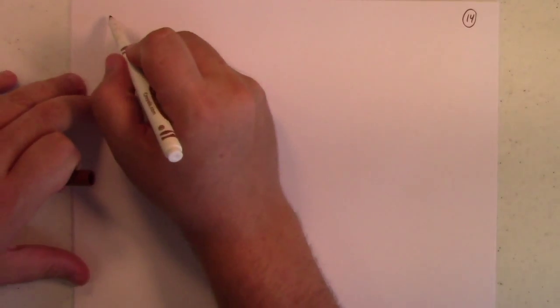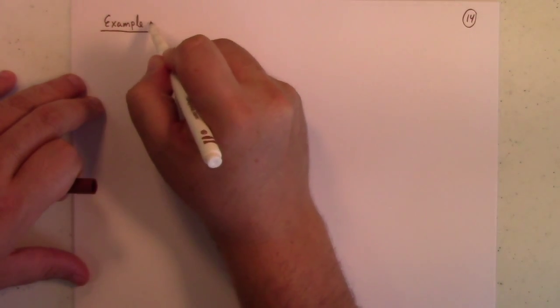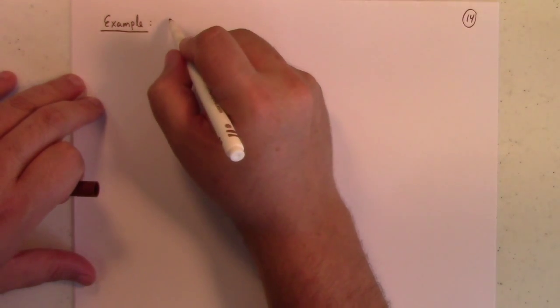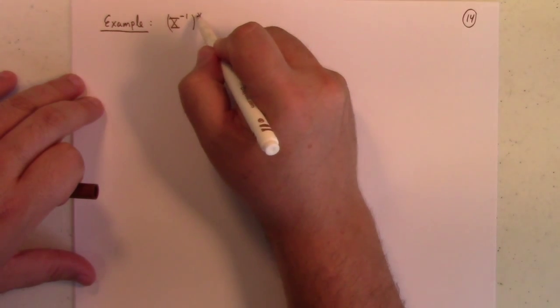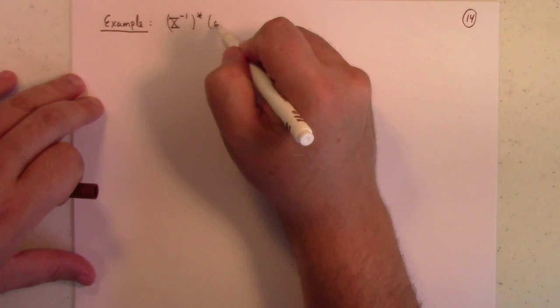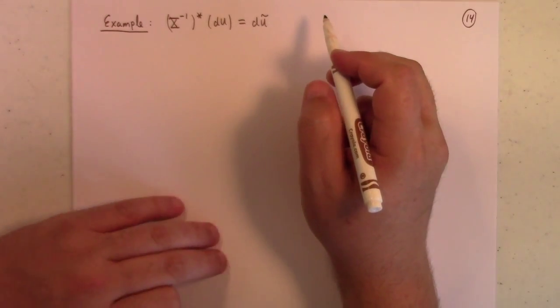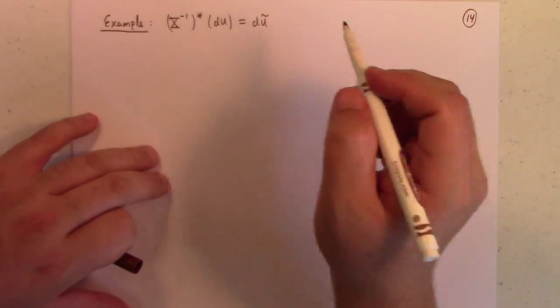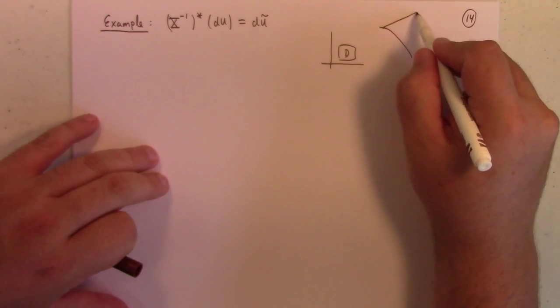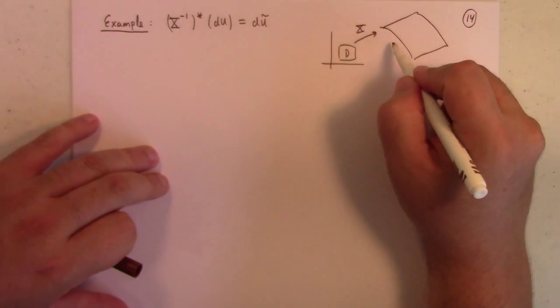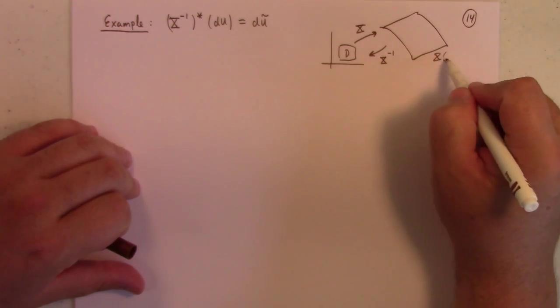So here's an example, and I used this term, I actually claimed this as an example a while ago, now I'll work it out. And here's the example, which is that the pullback under the inverse to a patch X of the differential form du is equal to what I called du tilde earlier in this lecture. So let's work it out.